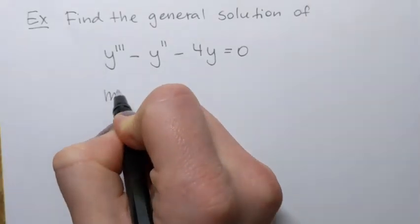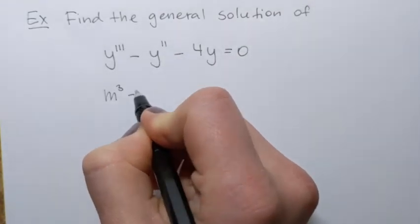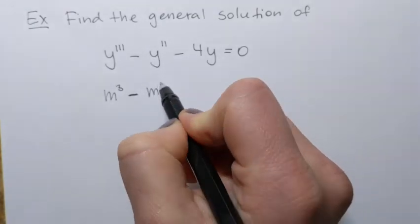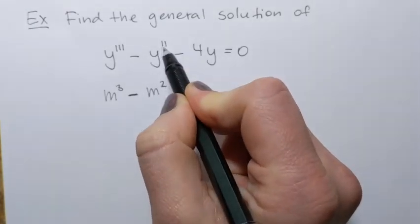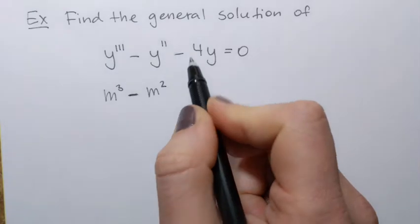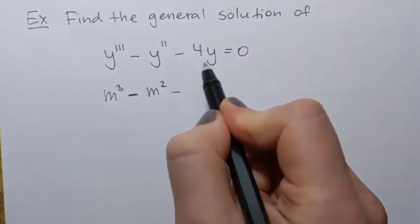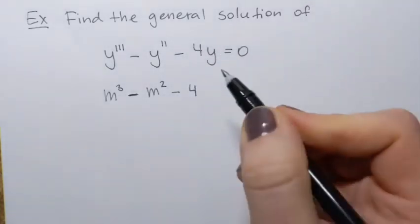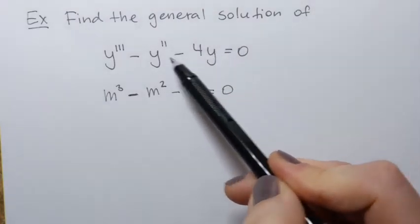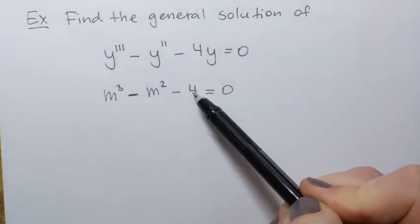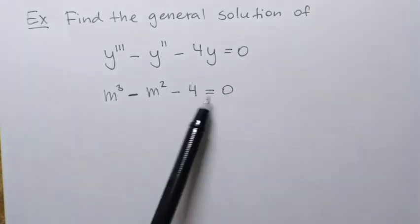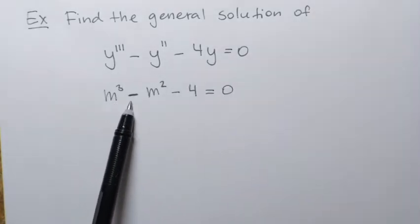The characteristic equation is going to be m cubed for the third derivative, minus — using the same coefficients — m squared for the second derivative. I don't have a first derivative term in this equation, so I'm not going to have just m. But negative 4y corresponds to the constant negative 4 in the corresponding characteristic equation. So we obtain the polynomial equation of degree 3, and we need to solve it.